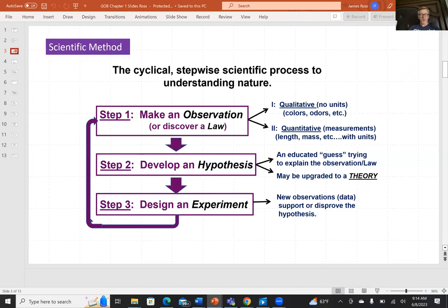This is not the only way to do science, but it's an important one. The scientific method is shown as cyclical. So we can start by making an observation about the natural world, or we can observe something that seems to reproduce. And we call that a law, a reproducible phenomenon.